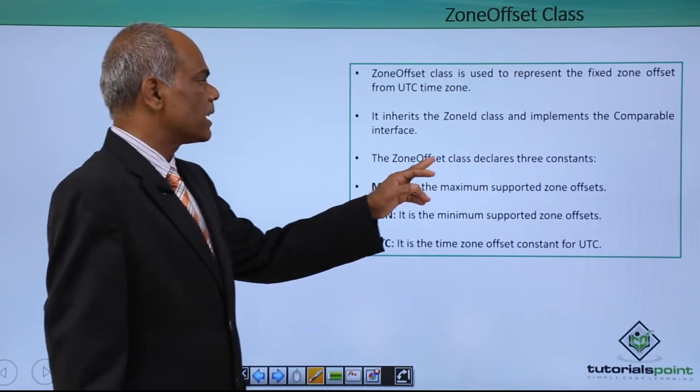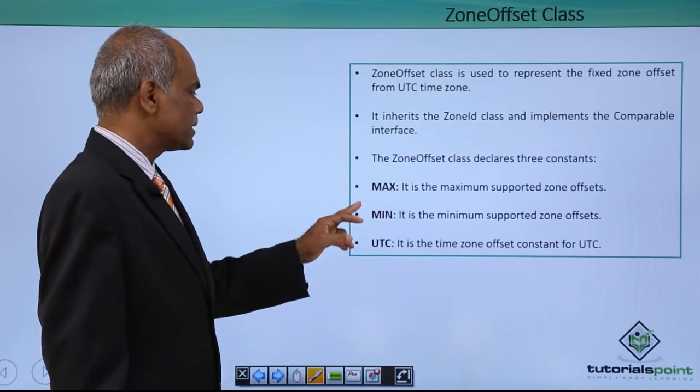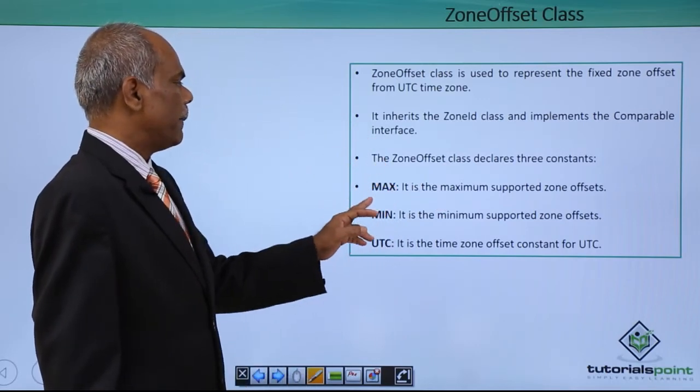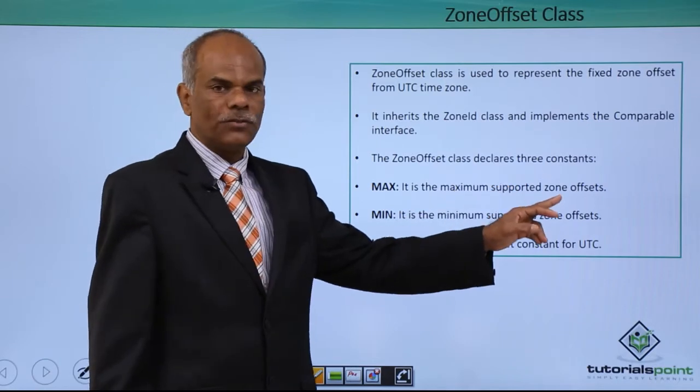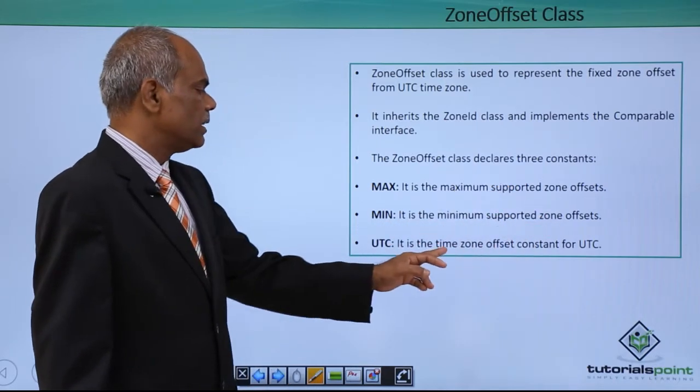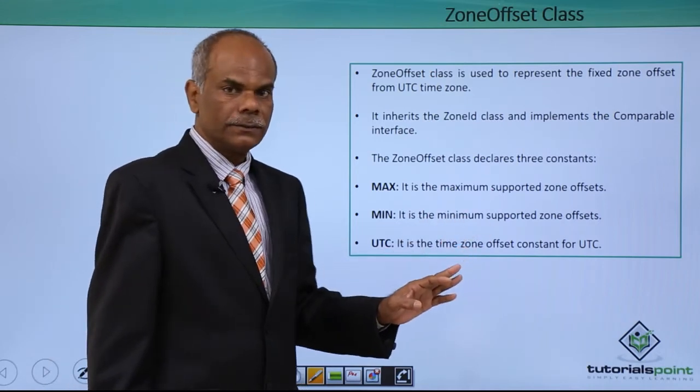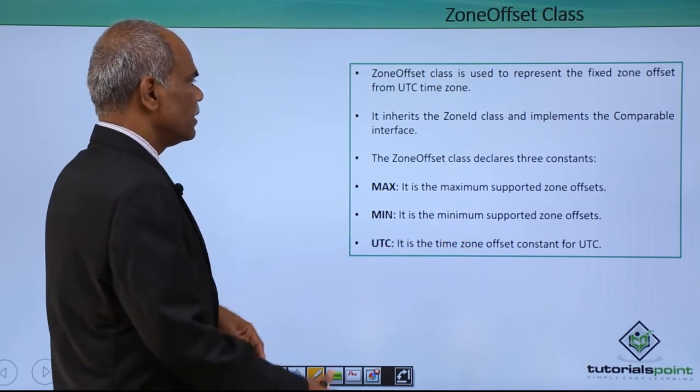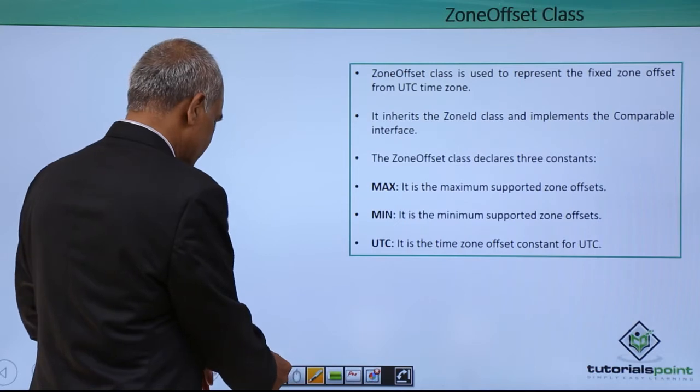Zone offset class declares three constants: max, min, and UTC. Max is the maximum supported zone offset, min is the minimum supported offset, UTC is the current time zone offset. Using these, the zone offset class can be defined.